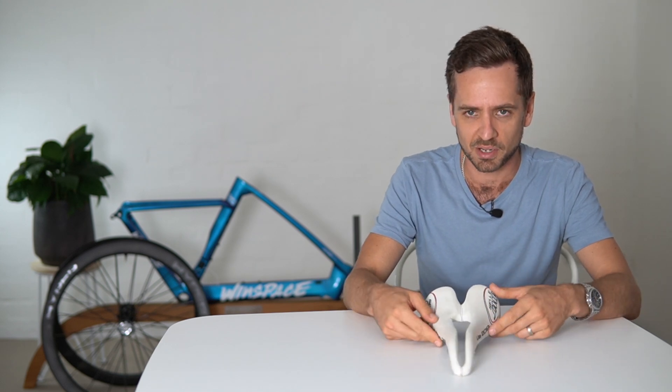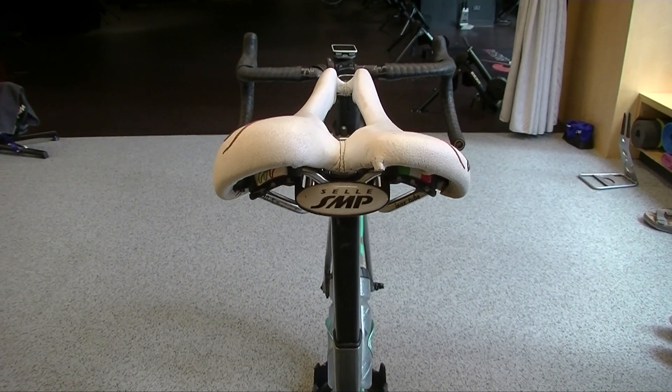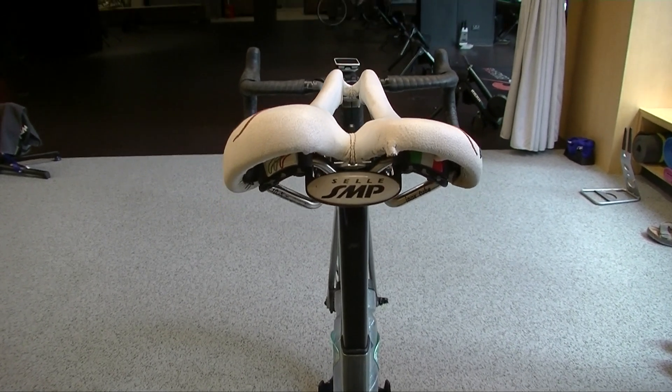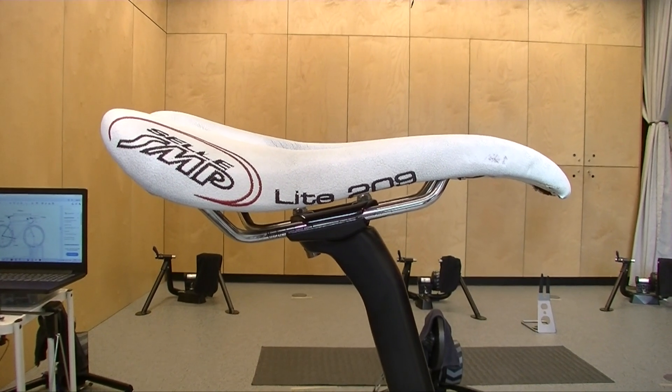So this is an SMP Light 209, and a client of mine donated this one to me. And we've basically repurposed it for a bit of an oddball reason. And the eagle-eyed viewers will probably notice that this saddle's a little bit unusual looking in that one side of it is lower than the other. And that's what we've done here. We've modified this seat.